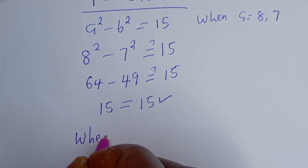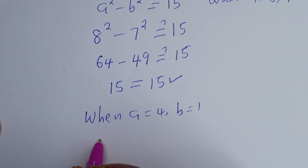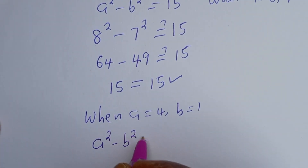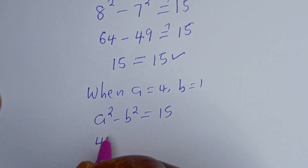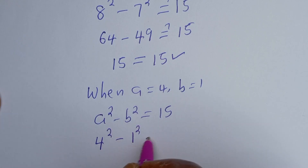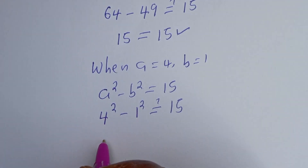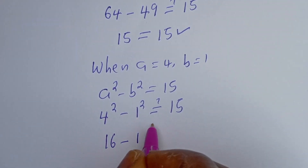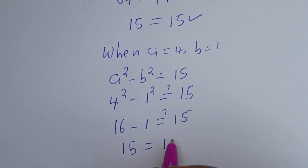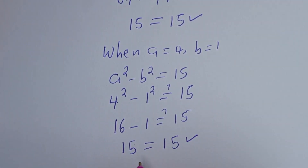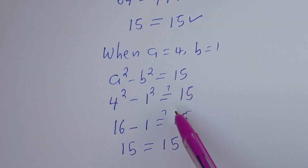Also, when a = 4 and b = 1, we have 4² - 1² = 16 - 1 = 15, which equals 15. This is also true. I hope you enjoyed the video. Please don't forget to like, share, comment, and subscribe to my channel. Thank you, bye bye.